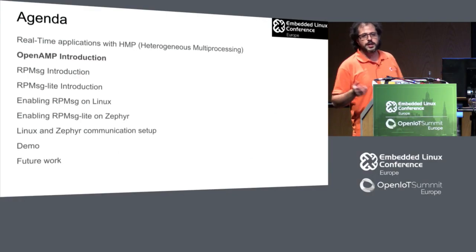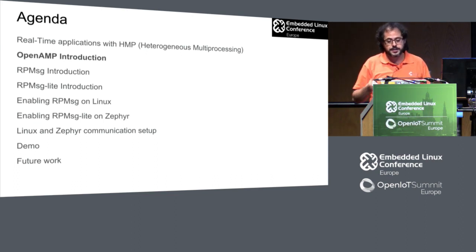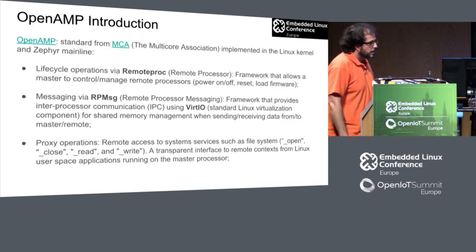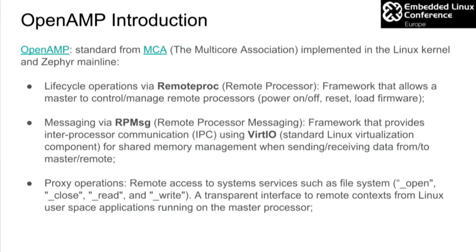Now let's talk about the frameworks and protocol options available to communicate between asynchronous cores. OpenAMP is a standard managed by the Multicore Association, implemented in both Linux kernel and Zephyr mainline. It is composed of RemoteProc — a framework for lifecycle operations that allows the master to control and manage remote processors, including operations like power-on, power-off, reset, and firmware loading.